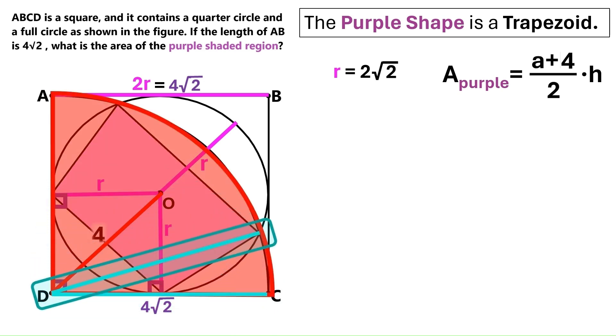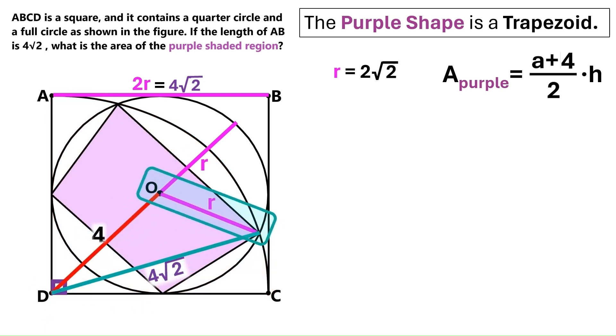So we can draw another radius here, and it will also be 4 times radical 2. Now let's draw this radius for the full circle, such that it meets the quarter circle's radius at this point. And we know the full circle's radius is 2 times root 2.